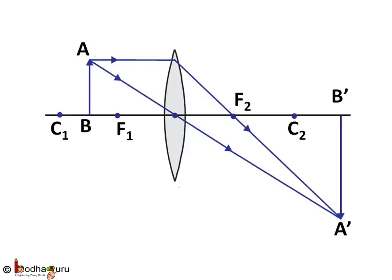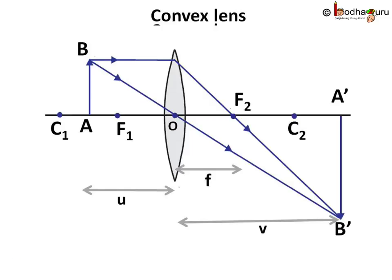Let's find that formula. Here is a convex lens. Let us say the distance between optical center O and object is OA. This is called object distance and is denoted by U.